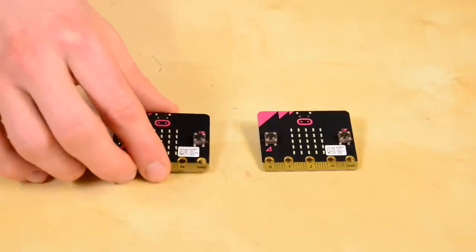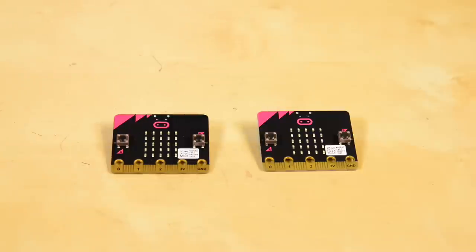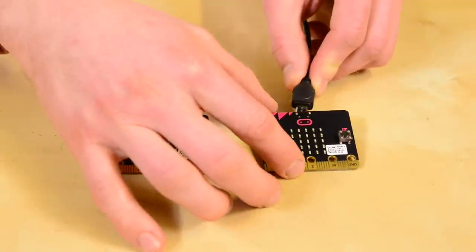For this project, you'll need two microbits, so you may want to find a partner who's willing to work together. We'll start with a simple two-way communication example where we'll write one program that gets loaded onto both microbits. Go ahead and plug in your first microbit to your computer.